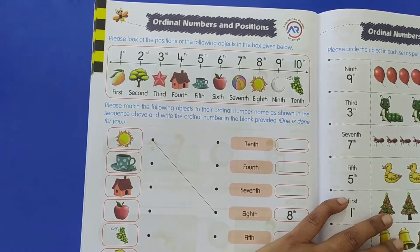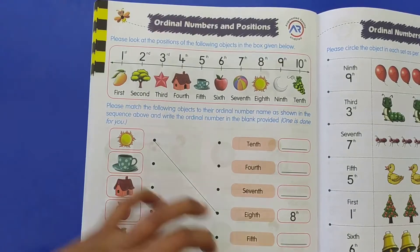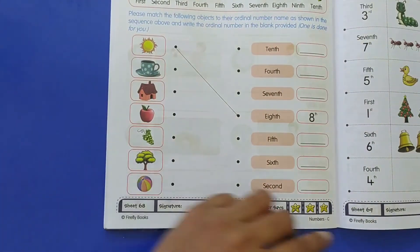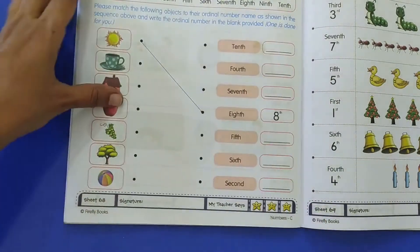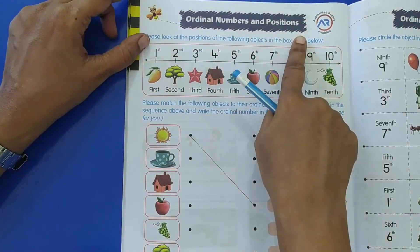Good morning children, let's start with the Maths book. The activity we will do today in the Maths book is on page 68 and 69. It is ordinal numbers and positions.